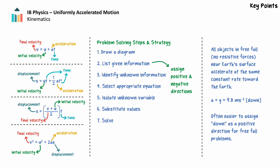To summarize, there are four uniformly accelerated motion equations, each with four variables. Provided three variables are known, an equation can be chosen and a problem can be solved. When solving problems, it's effective to follow a common set of steps: draw and label a diagram with known and unknown values, select an appropriate equation, then isolate and solve for the unknown quantity. For problems involving free fall, the acceleration is generally not provided but is known to be 9.8 m/s², and it can be easiest to define down as a positive direction.